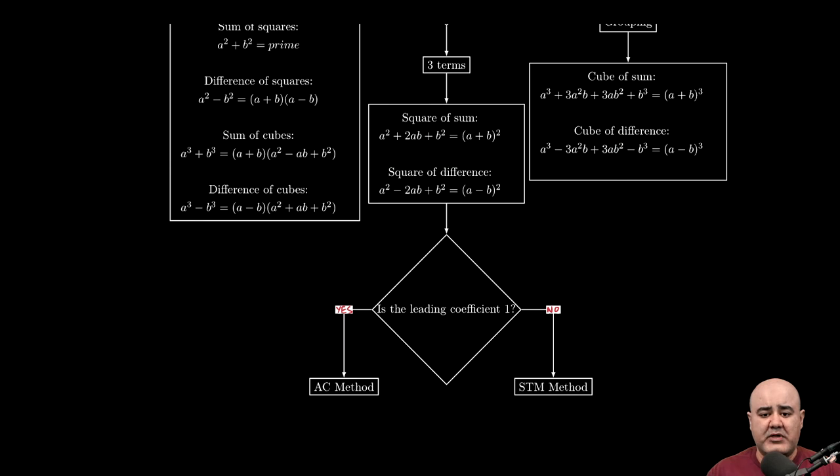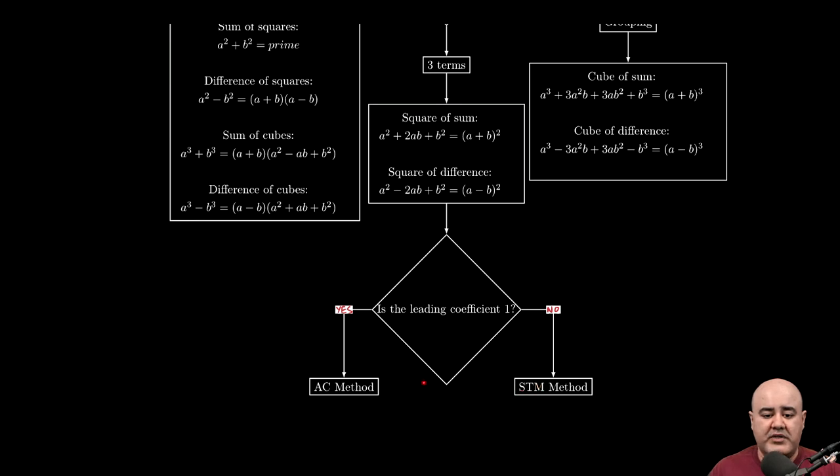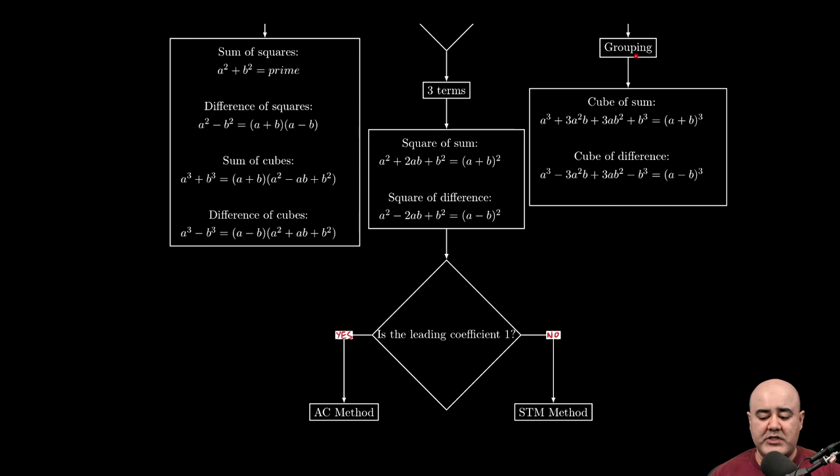Three terms. These are probably the most commonly seen ones. If you have a square of a sum or a perfect square, you want to try to factor that right away. If you have a square of difference, again, similarly, factor it right away. And then if neither of these formulas apply, because it's not a perfect square, then you ask yourself, is the leading coefficient one? If the leading coefficient is one, then we have something called the AC method that can help us out. If the leading coefficient is not one, then we have something called split the middle.